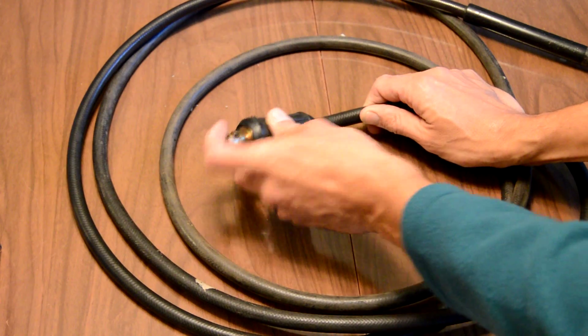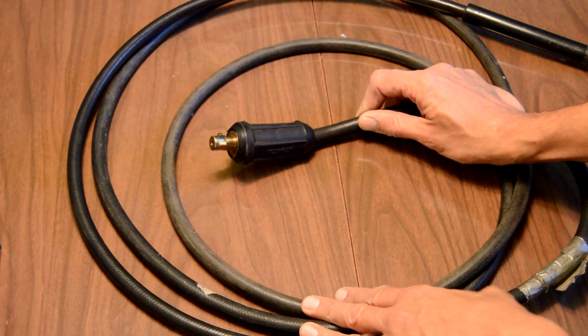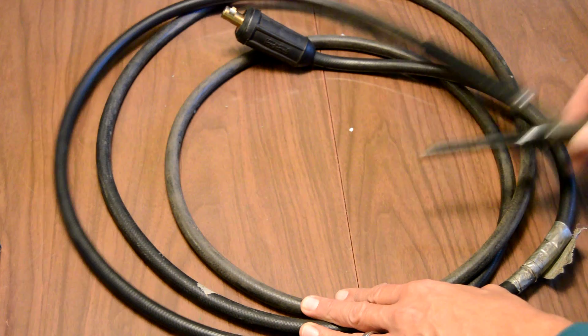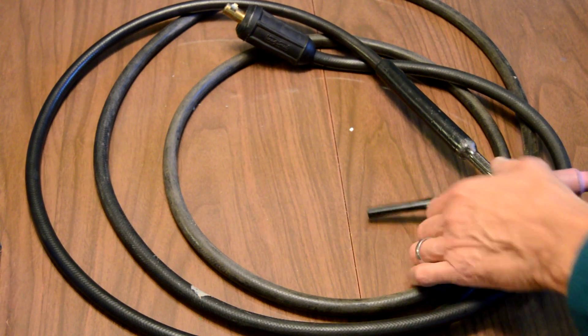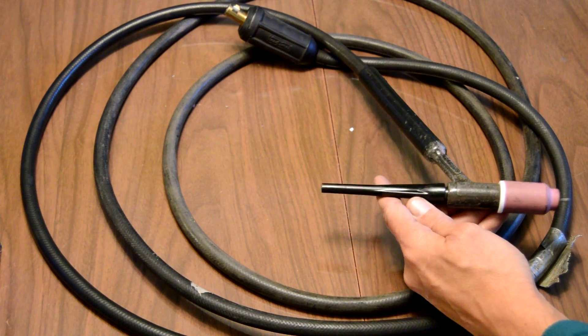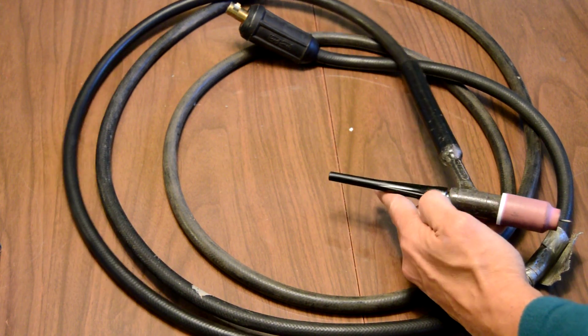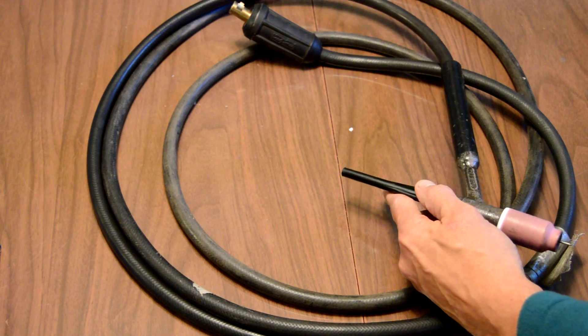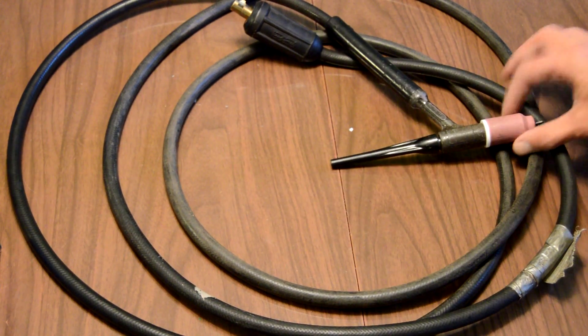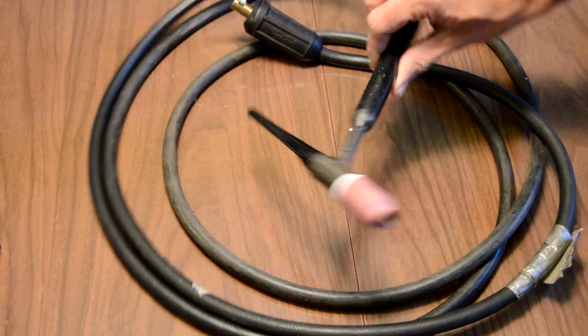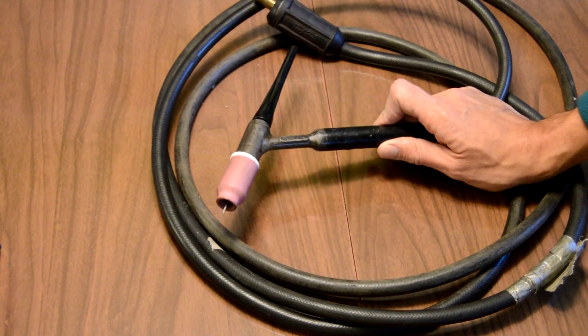It's the twist lock style adapter, so I wanted to go with a number nine TIG torch since most of what I do, a lot of what I've been doing lately, is really thin wall chromoly type stuff. I wanted to upgrade to a smaller torch with a flex hose.